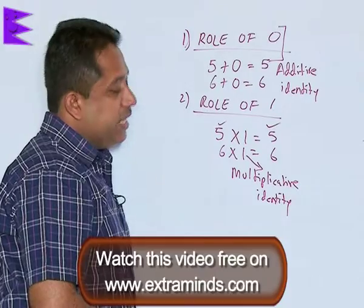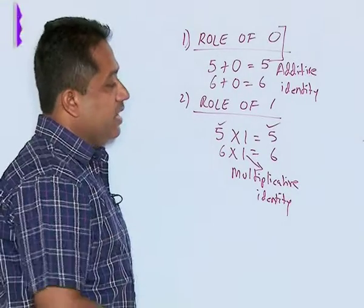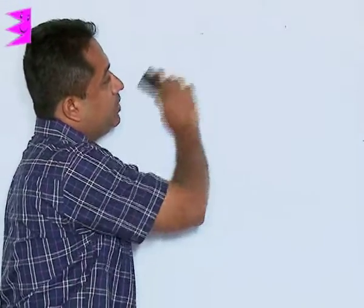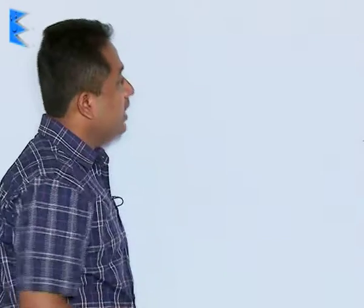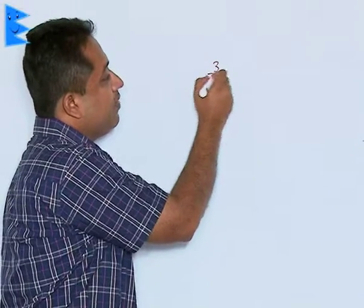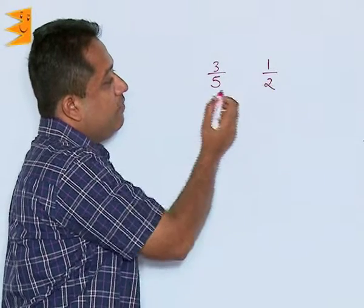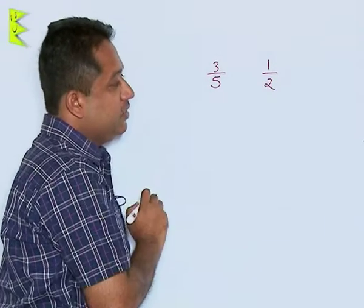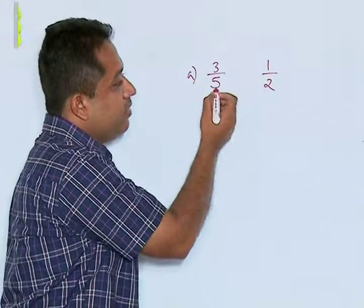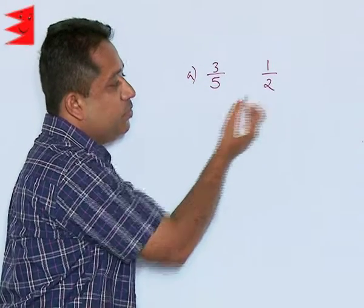We are going to study how we are going to find numbers between two rational numbers. If we are having, let us say, a number 3 by 5 and another number we are having 1 by 2 and we have to find a number between this. The best way to find this is that first we see that the denominator should be same.